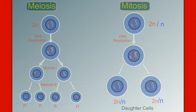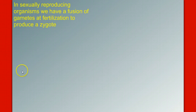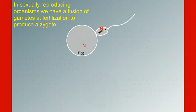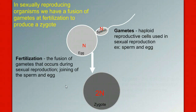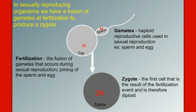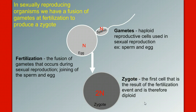Only a few more terms before we can get started. In sexually reproducing organisms, we have a fusion of gametes at fertilization to produce a zygote. Gametes are our sperm and egg — haploid reproductive cells used in sexual reproduction. When they fuse, we have an event called fertilization, which is the fusion of these gametes to form a diploid resulting cell that we call a zygote. So gametes are haploid, and their fusion results in a diploid zygote.